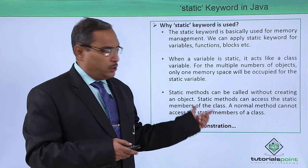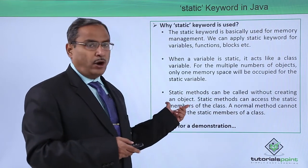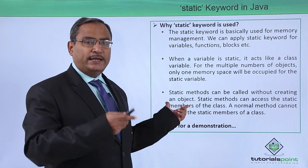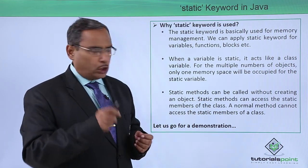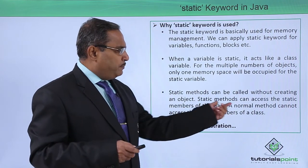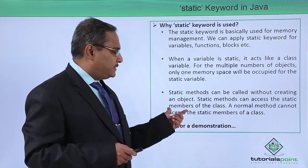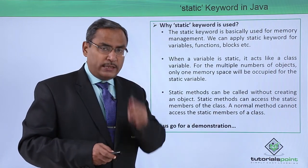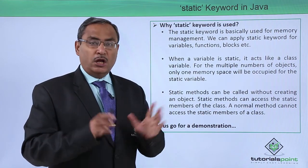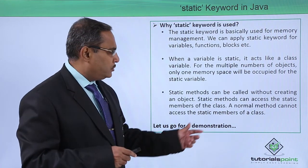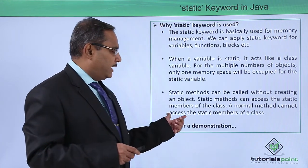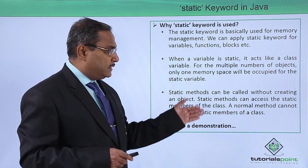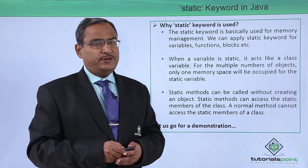Static methods can be called without creating an object under the class. You can use a static method using the class name with the dot operator. Static methods can access only the static members of the class — non-static members are not accessible from a static method.